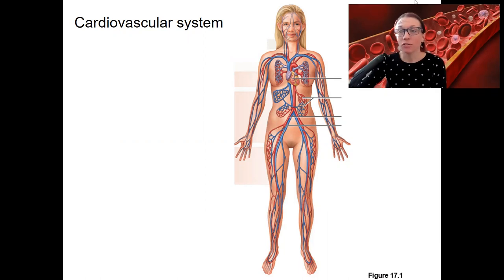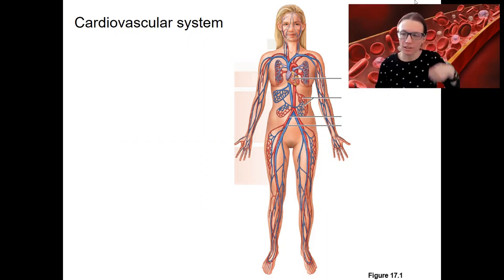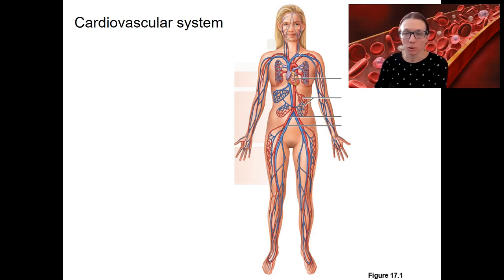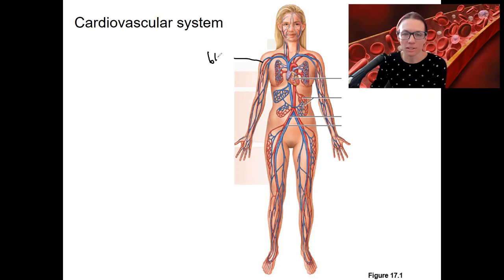This is the start of about five weeks that we'll spend on the cardiovascular system. This week is focused on blood. Blood is one of the three main components of the cardiovascular system. We'll talk about blood vessels and the heart after that. Let me write down those three components: blood vessels, heart, and blood.